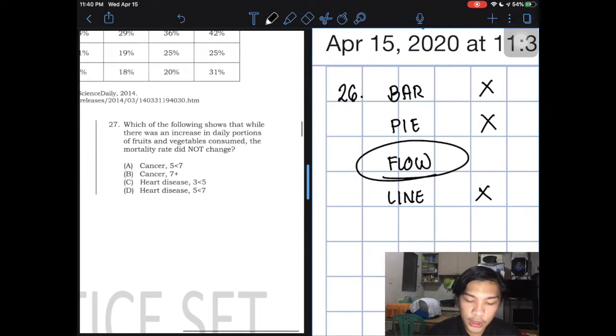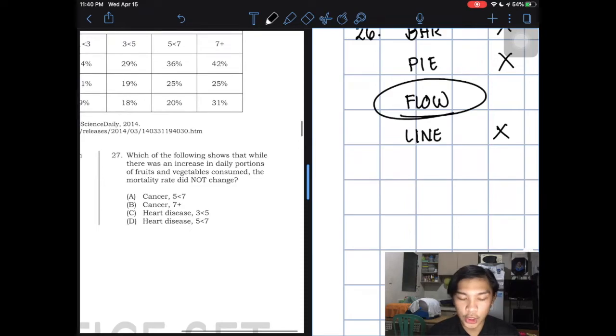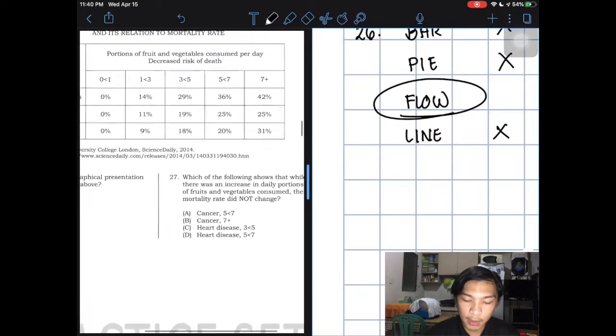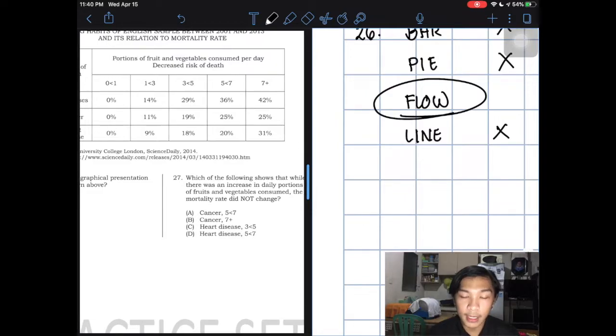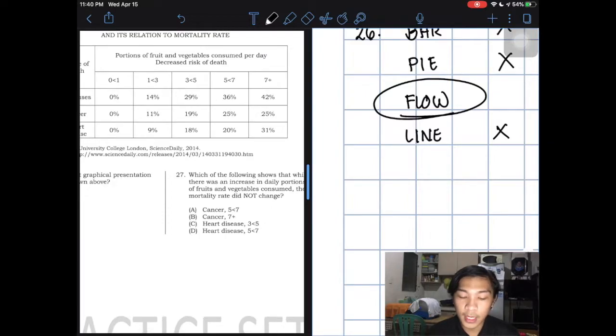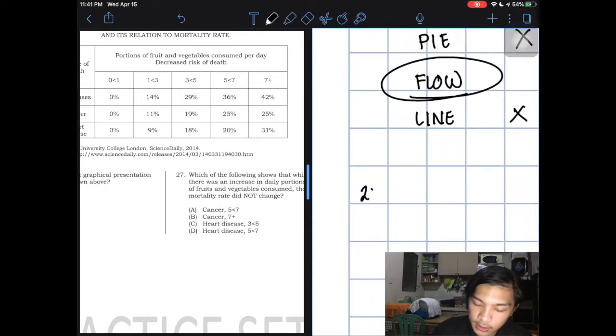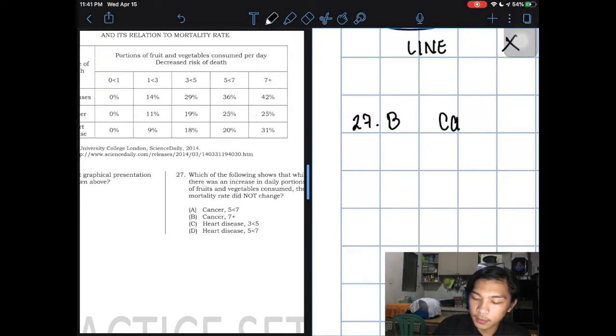Number 27, which of the following shows that while there was an increase in daily portions of food, fruit and vegetable consumed, the mortality rate did not change. So again, did not change. Check natin based on the table, makikita mo yung dalawang magkatabi na hindi nagchange, which is cancer 5 to less than 7 and then 7 and above. So even though it moved upward, hindi nagchange yung risk ng mortality rate. So the answer here is letter B, which is cancer 7 plus.